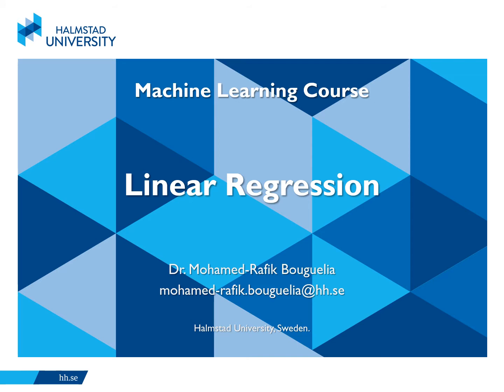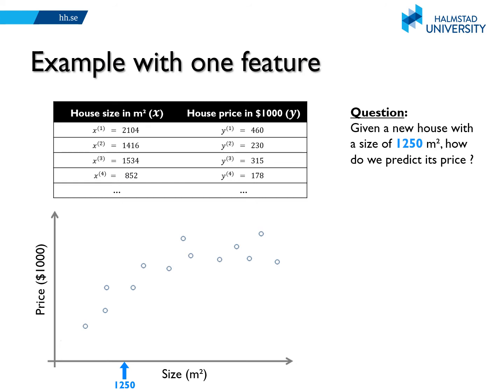Welcome to this lecture about linear regression. Let's take the following example where we have houses described by their size — that's the only feature we have, so this is the input. We also have the prices corresponding to those houses as part of our training data, so this is the output. Now given a new house which has this size, how can we predict its price?